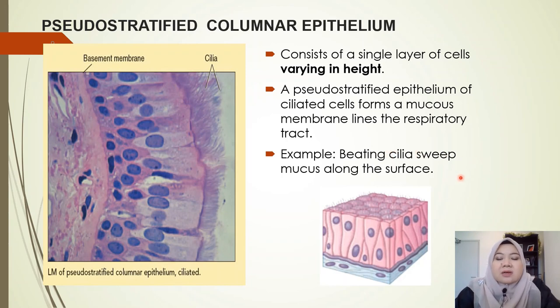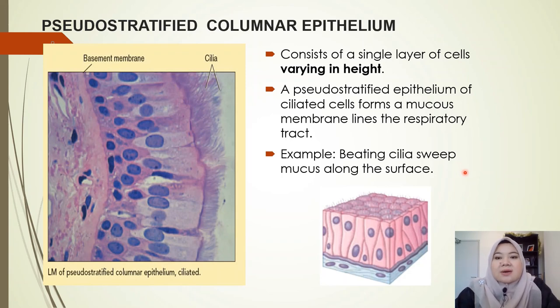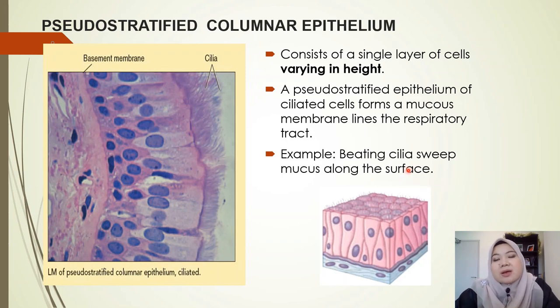Because mucus would trap pathogens and dirt particles, the beating cilia sweep the mucus along the surface and out from our respiratory tract.